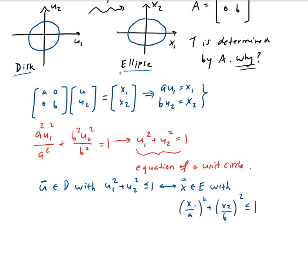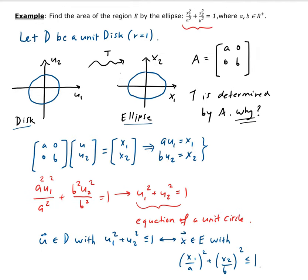So we showed that's the ellipse, including the surface and the inside. Therefore we showed that this is the matrix that we need to do this transformation.